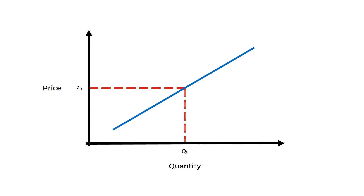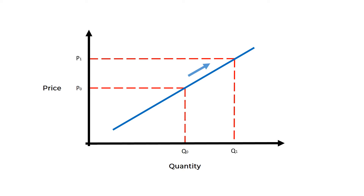Let's look at shifts along the supply curve. If we move right along the curve, we can see that prices will go from p0 to p1. More suppliers will be attracted to the market because of the higher price, and quantity will increase from q0 to q1.